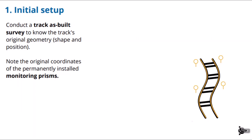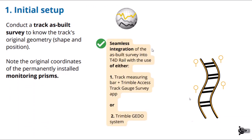We also want to know the original coordinates of where we placed our permanently installed monitoring prisms. In this first step, how does T4D Rail play into this? We have a seamless integration of as-built surveys into T4D Rail when we use either of these two track as-built survey solutions: a track measuring bar paired with the Trimble Access Track Gauge survey app, or the Trimble GUIDA system. If you do your track as-built survey with either of these solutions, there is a seamless integration into T4D Rail.